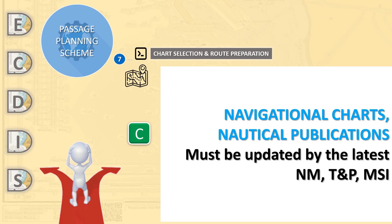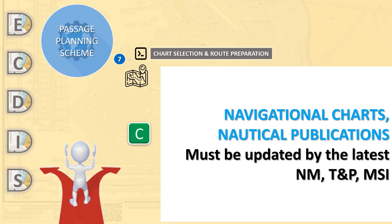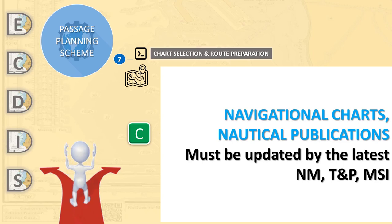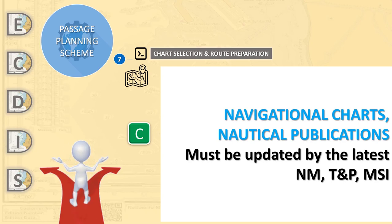As stated above, SOLAS also requires nautical publications such as sailing directions, list of lights, tide tables and all other nautical publications necessary for the intended voyage to be adequate and up-to-date. The voyage-specific editions need to be pre-positioned on the bridge for reference, and a list of all publications involved with the voyage plan has to be completed and added to the voyage handbook.